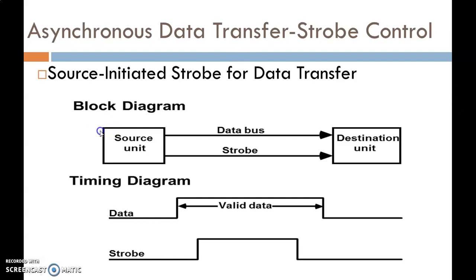Here in this diagram, we have the source unit and the destination unit. First of all, whenever the source unit wants to transfer data to the destination, it places the data on the data bus. After placing the data, it generates a Strobe signal to inform the destination unit that data is being sent on the data bus.